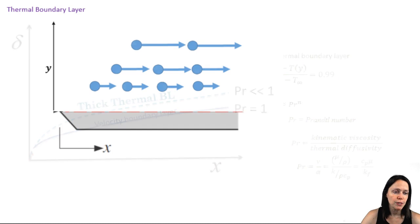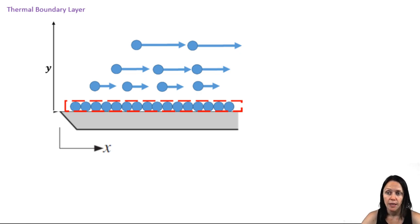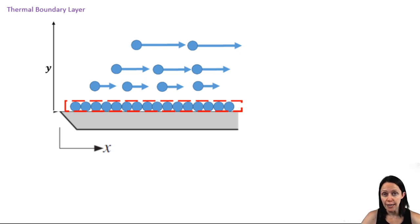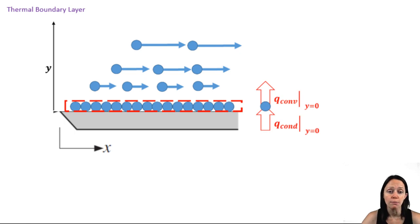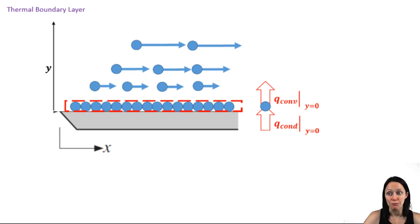If we zoom in on the plate and take a look at the molecules at the surface, right at y equals zero, the fluid velocity there is zero due to the no-slip condition. As we go farther from the surface, those molecules are moving faster, as indicated by the longer and longer arrows. We can do a surface energy balance on the molecules at some location x, where y is equal to zero, and we see that the heat transfer rate by conduction from the plate is equal to the heat transfer rate by convection.